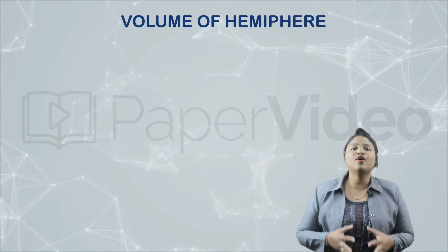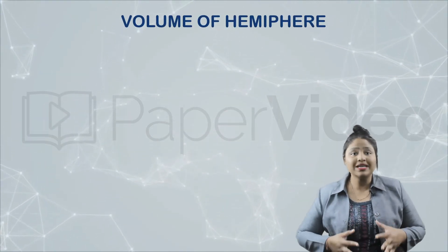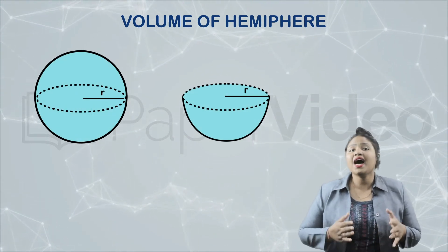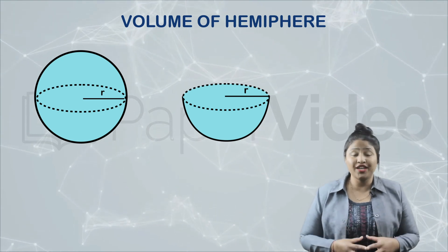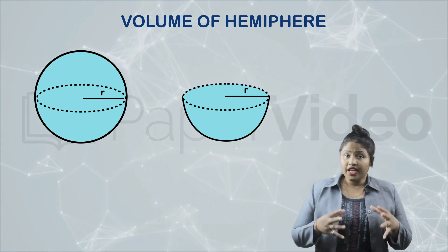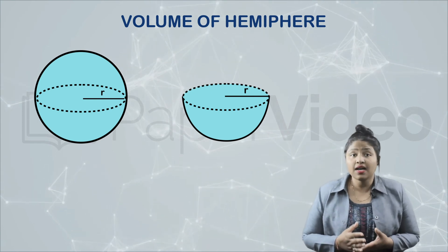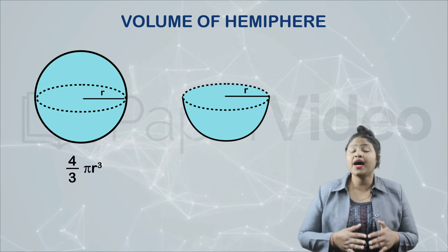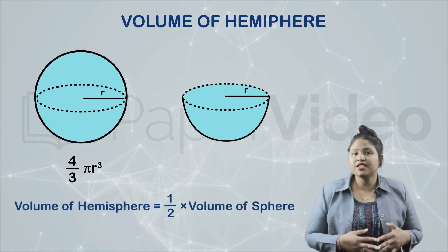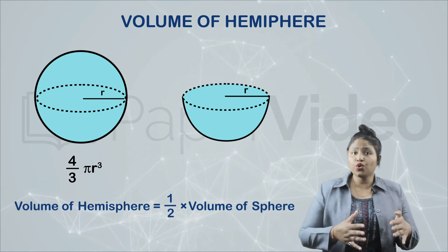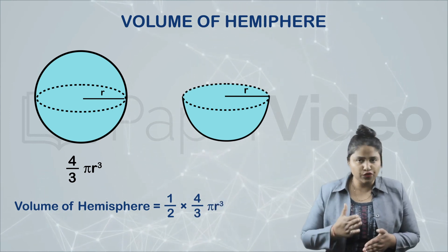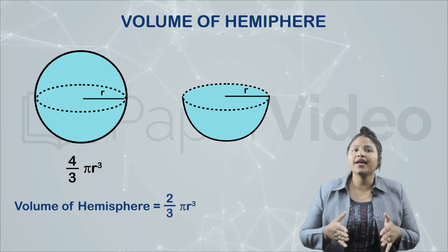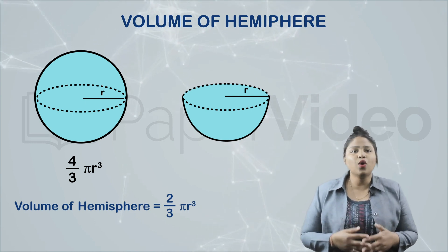What will be the volume of a hemisphere? Since a hemisphere is just half of a sphere, its volume will also be half of the volume of a sphere of the same radius. The volume of a sphere of radius r is four upon three pi r cube. So the volume of a hemisphere will be half into four upon three pi r cube, which simplifies to two upon three pi r cube. This is the volume of a hemisphere.